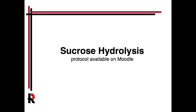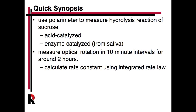This is the pre-lab video for the sucrose hydrolysis lab in Chem 253. The protocol is available on Boodle for download. This lab combines carbohydrate chemistry and kinetics, and we're going to use a polarimeter. We'll be looking at the optical rotation of a chiral compound and tracking this change to measure the hydrolysis of sucrose, or table sugar. We'll measure optical rotation in 10-minute intervals for about two hours, getting rate data to determine a rate law and a rate constant using the integrated rate law.